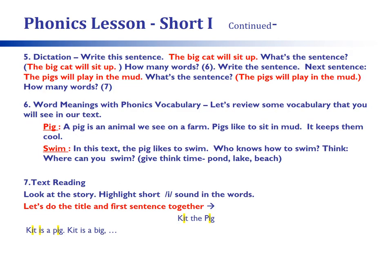The fifth step is dictation. Students should write a few sentences, identifying how many words are in the sentence by clapping out the words and then writing them. Step 6 is a vocabulary review of short I sound words that will appear in the text. As seen in the text, the word 'pig' is defined with additional activities provided for language enhancement. Step 7 entails reading the short I words in context.